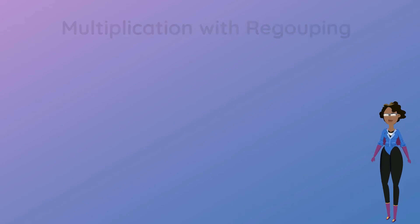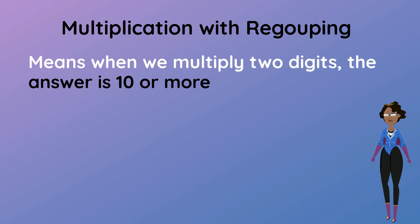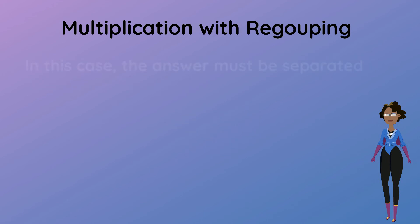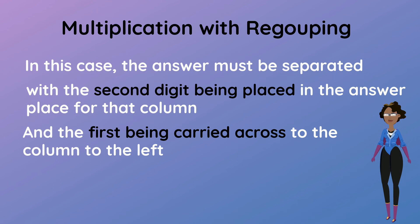On to multiplication with regrouping. Multiplication with regrouping means that when we multiply two digits the answer is 10 or more. In this case the answer must be separated with the second digit being placed in the answer space for that column and the first being carried across to the column to the left to be added in after that number is multiplied.